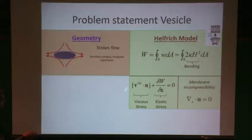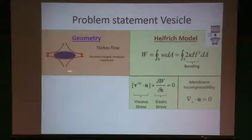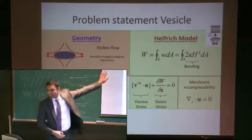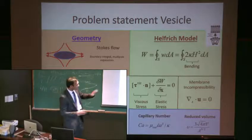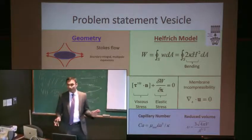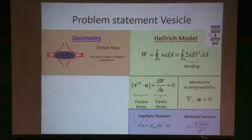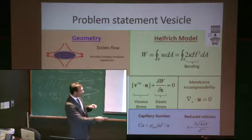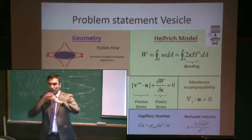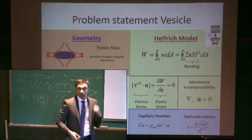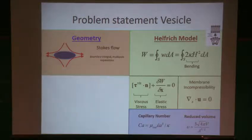Under this condition, the viscous stress due to the flow on the surface is balanced by the elastic stresses in the membrane. In all experiments performed, the viscosity contrast between the inner and outer fluid is exactly the same, so we assume a viscosity ratio of 1. Given this setup, there are only two dimensionless numbers describing the dynamics: a capillary number based on the bending modulus of the lipid bilayer, and a reduced volume telling you the degree to which a vesicle is deflated, ranging from 0 to 1. A reduced volume of 1 means a perfectly spherical vesicle; much less than 1 means highly deflated and tube-like.